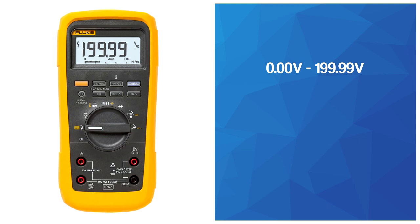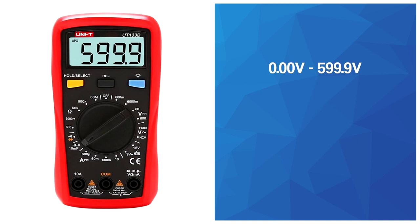Now let me explain what is meant with counts. Count is basically defined as the total amount of values that can be displayed. If a multimeter can display a zero and a one, then it has a count value of two. If a multimeter can display from zero to nine, then it has a count value of ten. For instance, this multimeter gives a maximum value of 199.99 volts, which means that the total amount of counts is twenty thousand. And for another multimeter the count would be six thousand, since the screen can display six thousand different values.